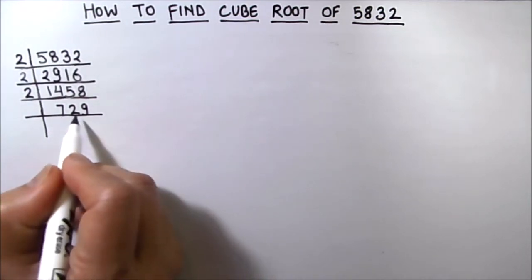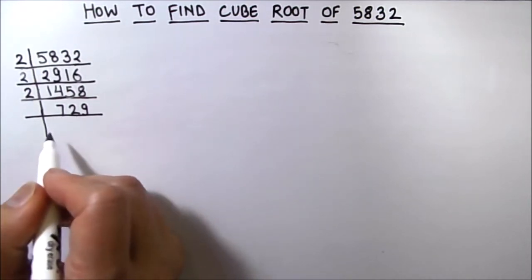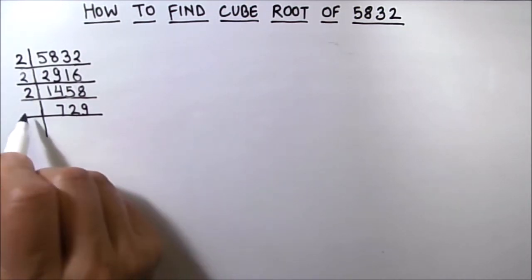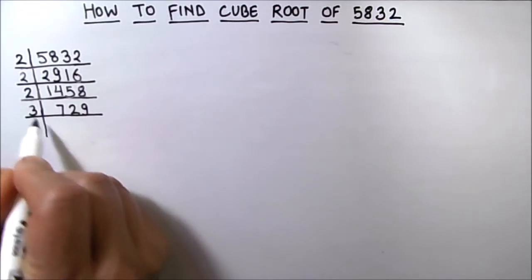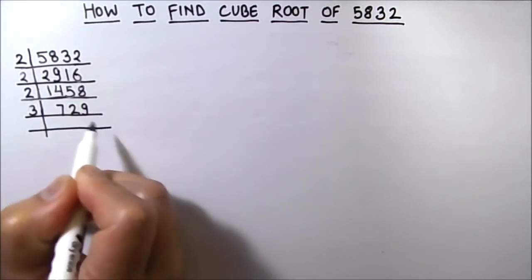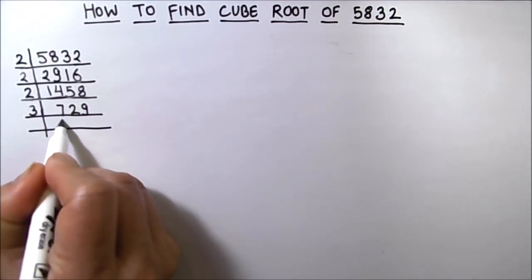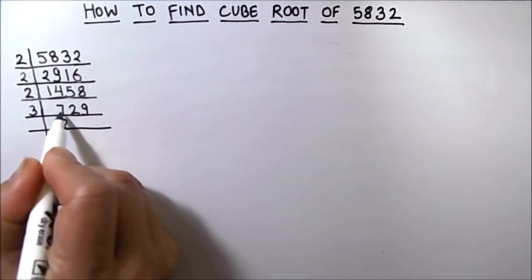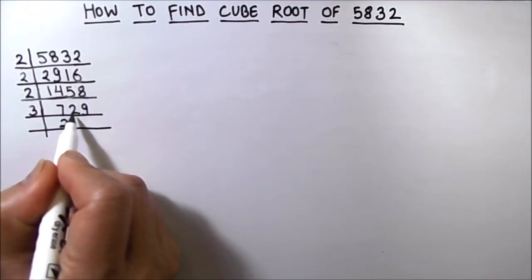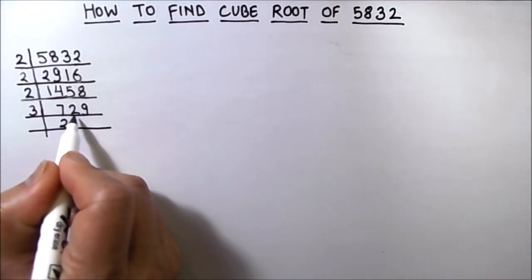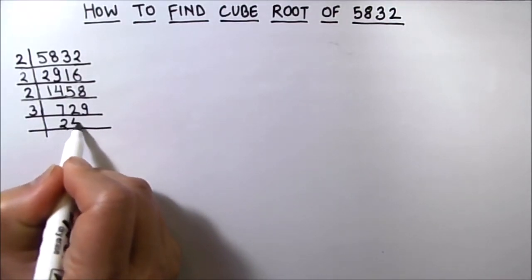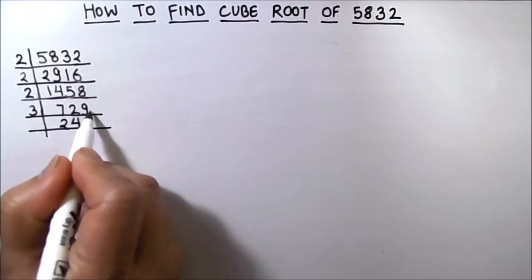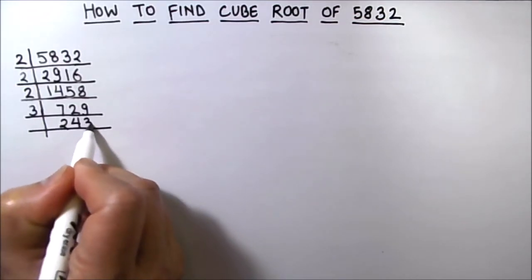Now 729 is an odd number, so let's divide it by 3. 3 times 2 is 6, 1 is carried over to the next digit, so this becomes 12. 3 times 4 is 12 and 3 times 3 is 9.